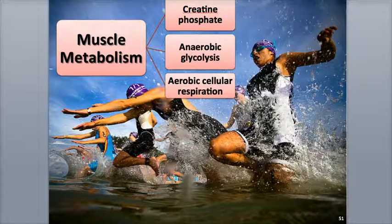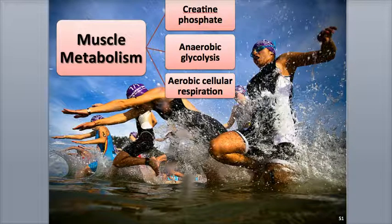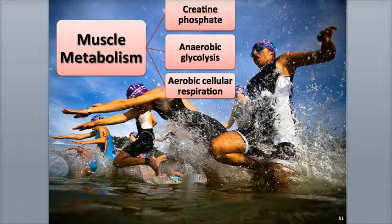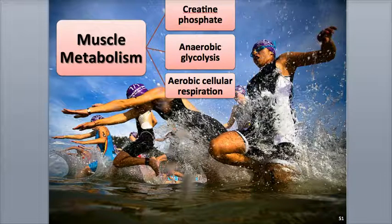Muscle fibers are extremely energy-dependent cells. When they are busy contracting, they consume large amounts of ATP very quickly. Contracting muscle fibers can use about 2 million ATP molecules every single second. The amount of ATP inside a muscle fiber at any given moment can maintain only several seconds of contraction. ATP is needed by muscle fibers primarily to begin the contraction cycle and to pump calcium ions back into the SR, the sarcoplasmic reticulum, during relaxation.